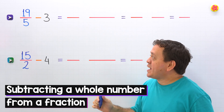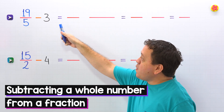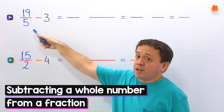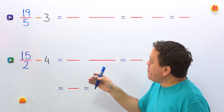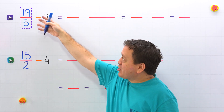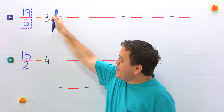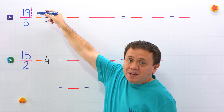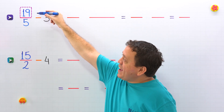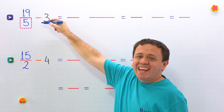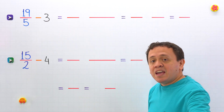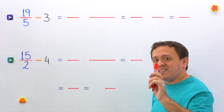Hi, today we're going to take a look at how to subtract a whole number from a fraction. Before getting into it, never forget that in a fraction like this one, the top number is the numerator and the bottom number is the denominator.